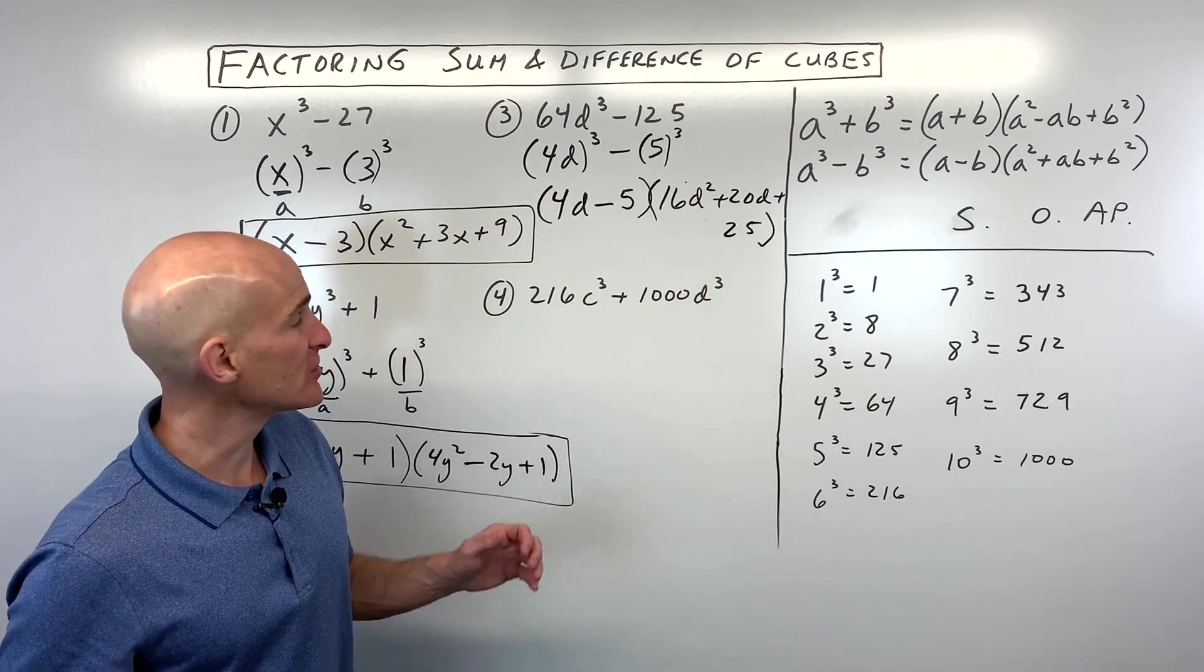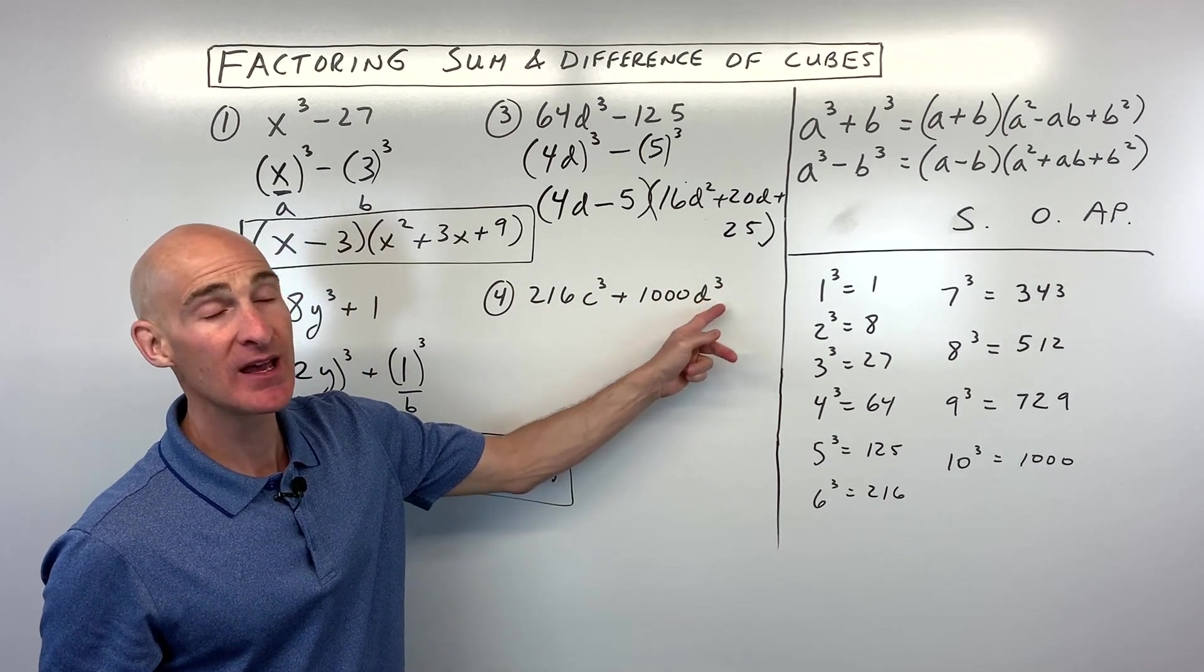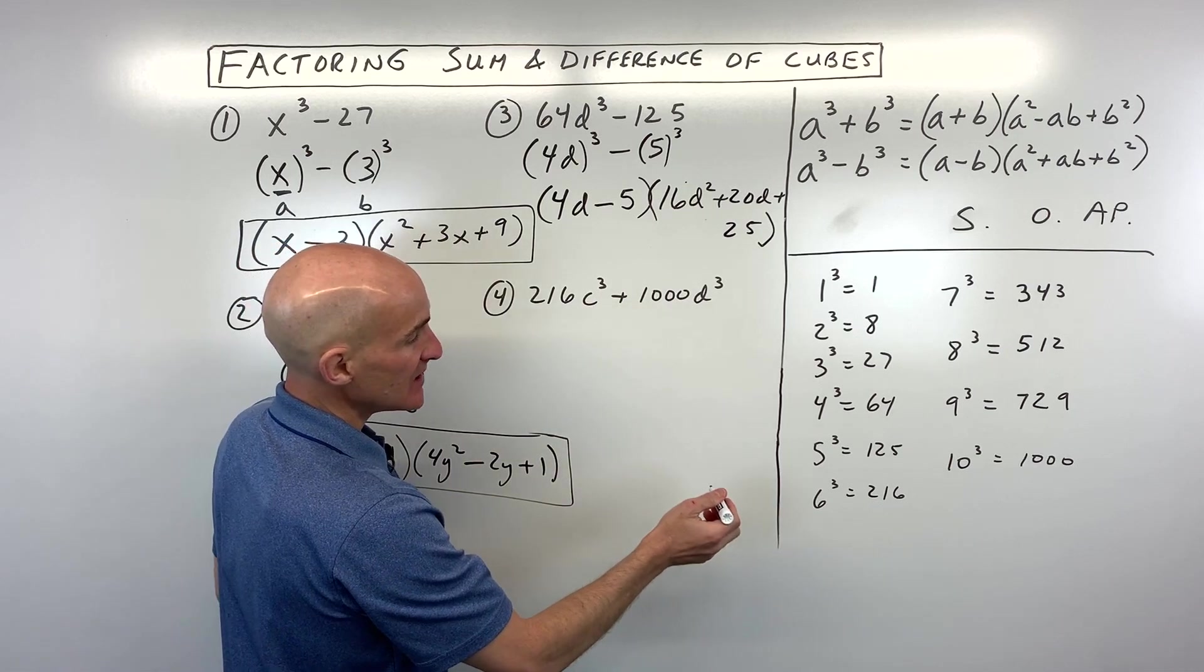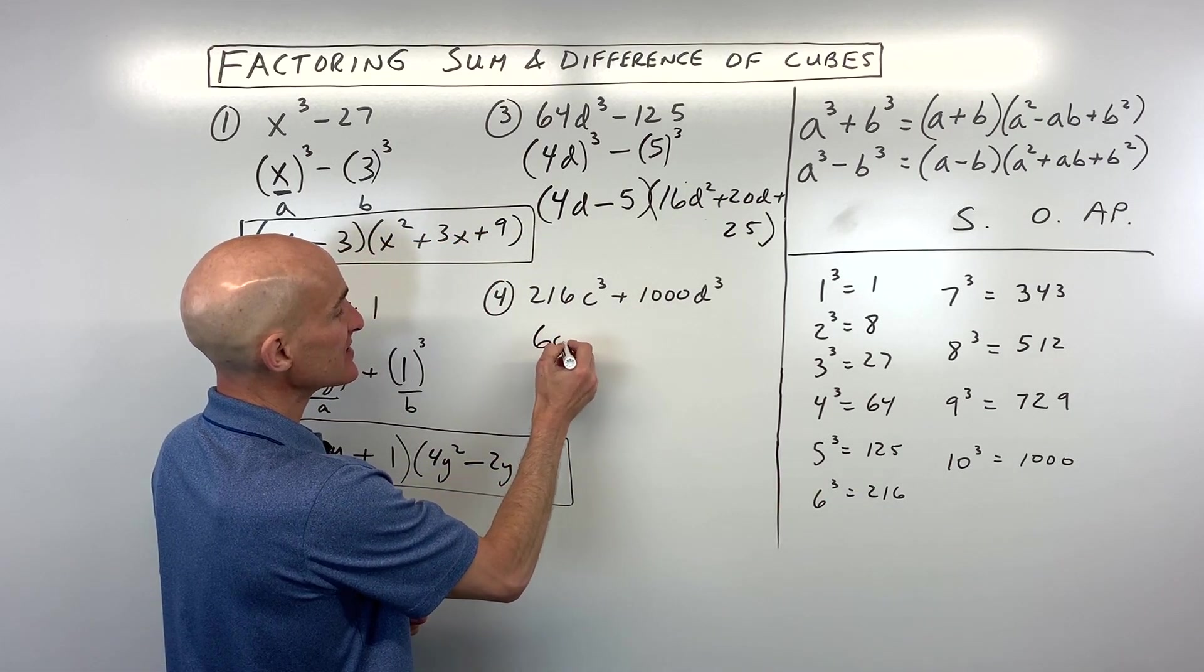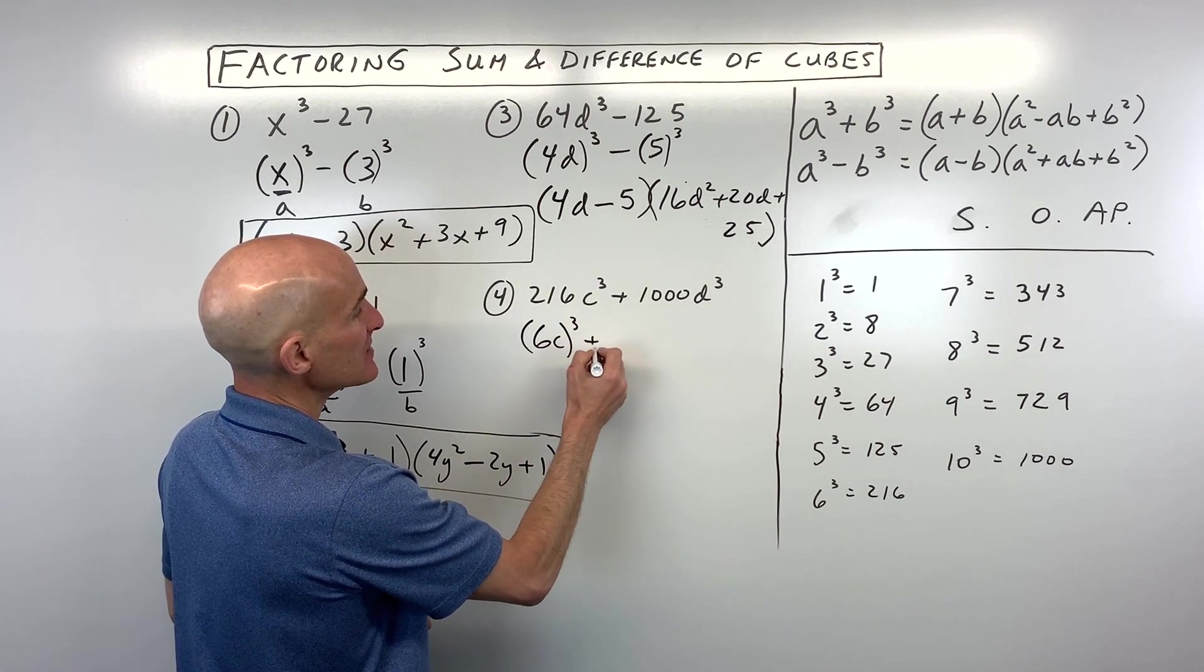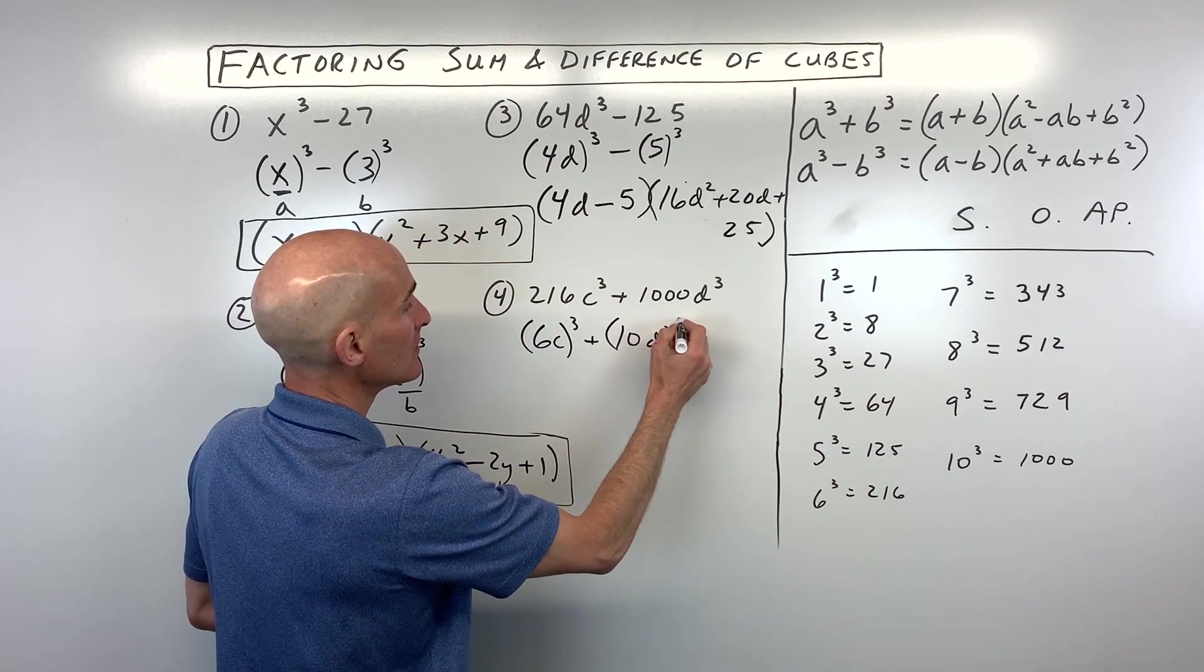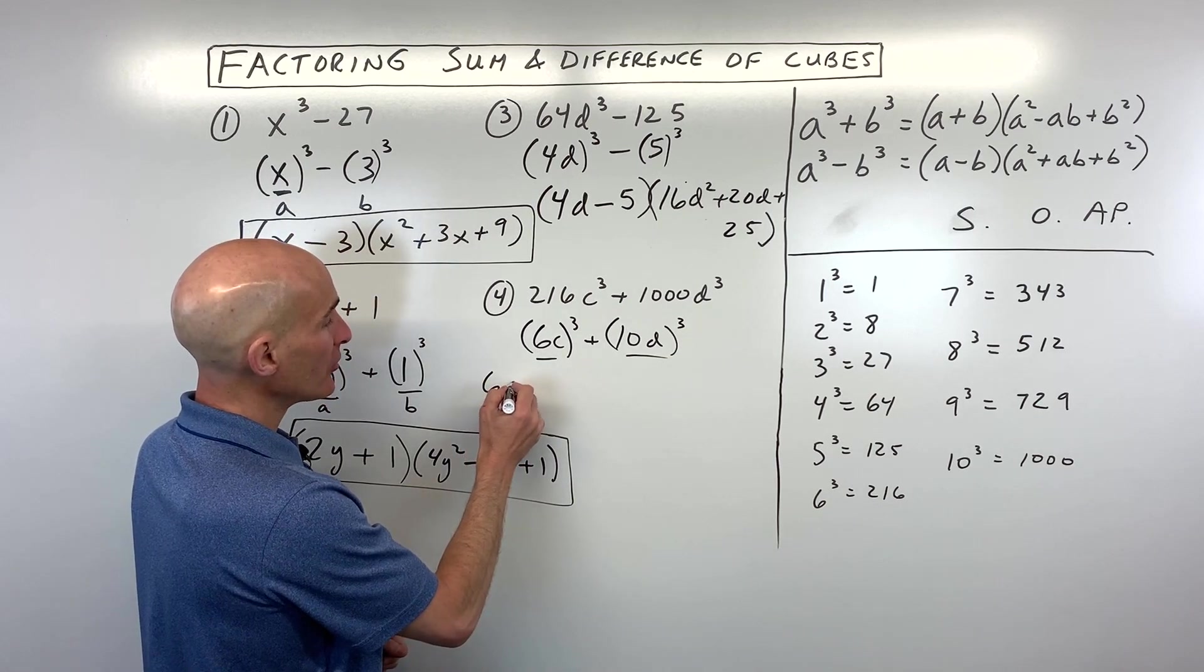Last example. See if you can do this one: 216c³ + 1000d³. This one, what times itself 3 times is 216? Well, you can see that's going to be 6³. So this is going to be 6c. What times itself 3 times is 1000? Well, that's going to be 10³. So this is going to be 10d, the quantity cubed. So this is our a and this is our b. So now if we put it all together, we've got a + b.